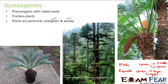The male cones produce sperm and the female cones produce eggs. The female cones have a sticky resin-like substance that catches the sperm released by the male cones, attracting the sperm for fertilization. Once fertilization takes place between the sperm and eggs, the female cone enlarges in size.